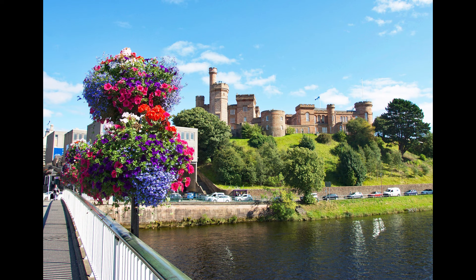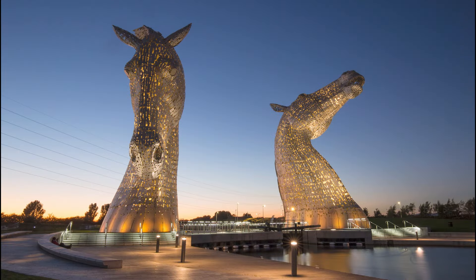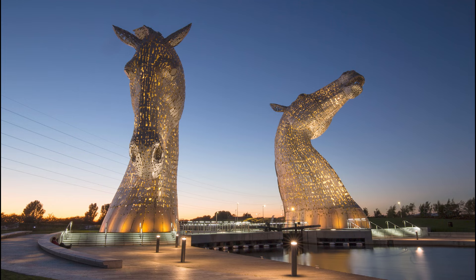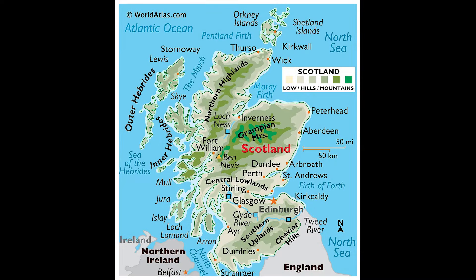The use of Scotia gradually shifted from Ireland to the area now known as Scotland, due to the increasing prominence of the Gaelic-speaking settlers in the region. By the 10th century, the term Scotia was used to refer to the land north of the River Forth. This change coincided with the decline of the Picts, the original inhabitants of northern and eastern Scotland, and the rise of the Gaelic-speaking kingdom of Alba.